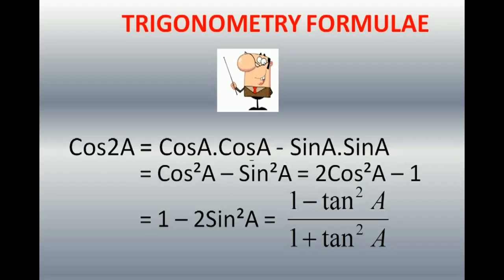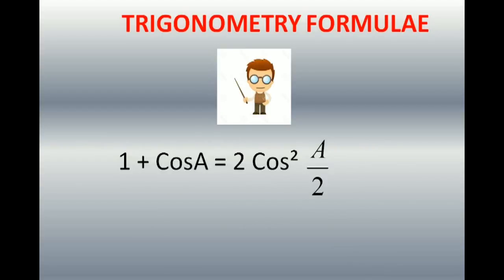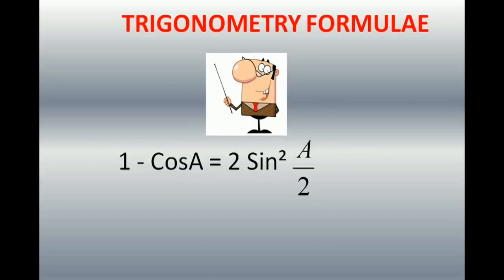Now the application: 1 + cos A can be written as 2 cos²(A/2). This is very, very important — just remember it, mug it up: 1 + cos A = 2 cos²(A/2). Equally important: 1 − cos A = 2 sin²(A/2). These are very, very important submultiple formulas. If you remember these, your life will be very easy.